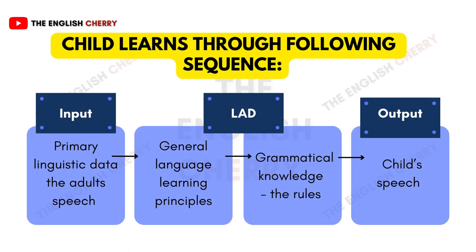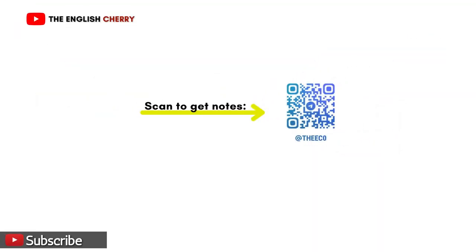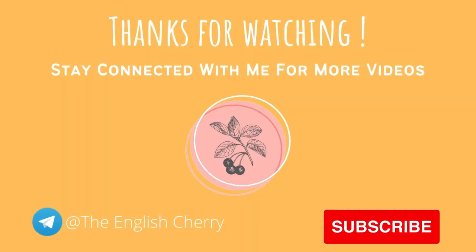According to Chomsky's cognitive theory, a child learns to speak in the following way: first, the child takes in inputs from adult speech, observing how adults speak. Then the child is gradually made aware of language learning principles — how to form simple words and simple sentences — followed by exposure to grammatical rules. Finally, combining all three, the child's speech is developed and they are able to utter words and sentences in a normal way. I hope you got to know these theories in the simplest manner. I encourage you to go and do more research. Thank you for listening, and see you in the next one.